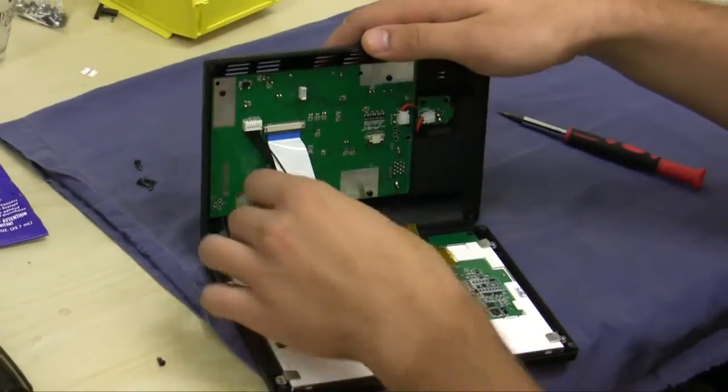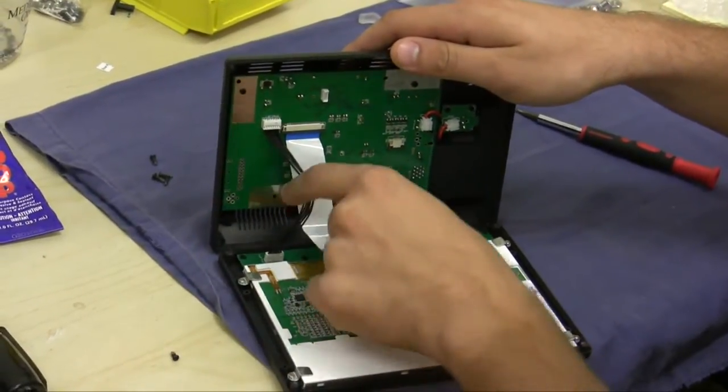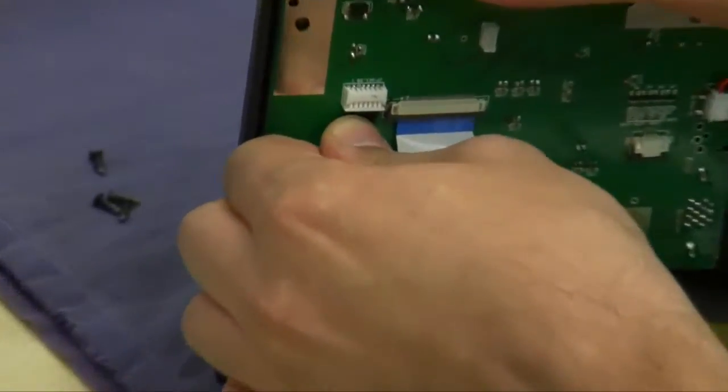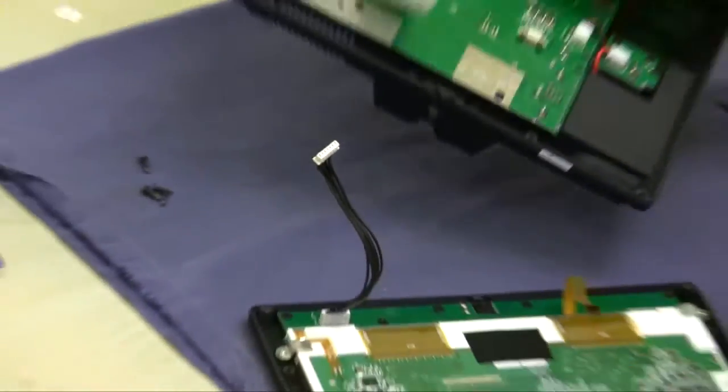The next thing you're going to do is disconnect all the wires that are for the button panel. Just pull on this down and there you go.